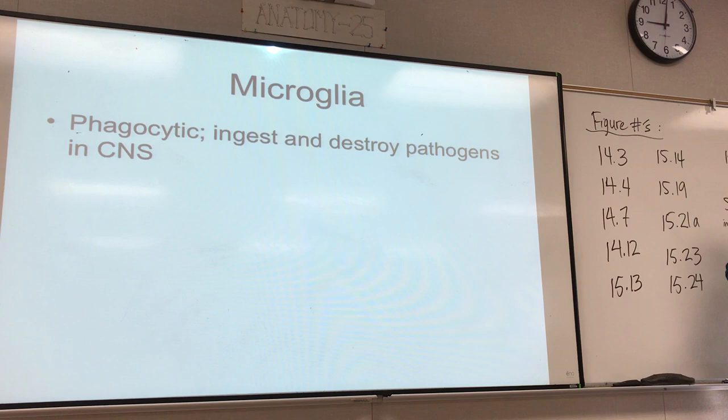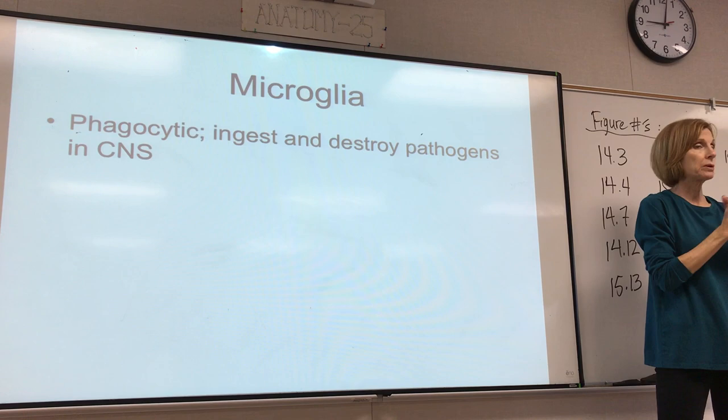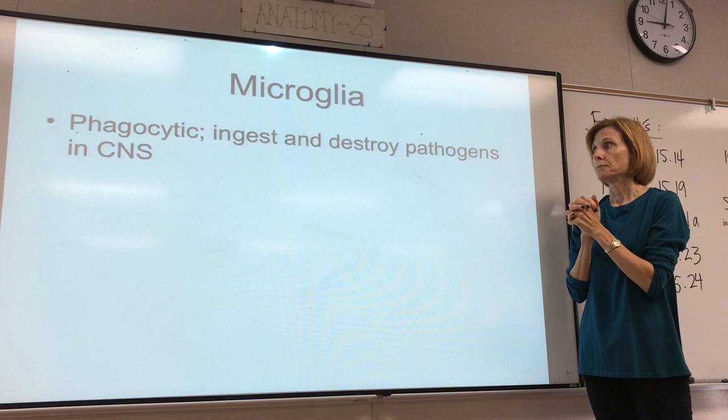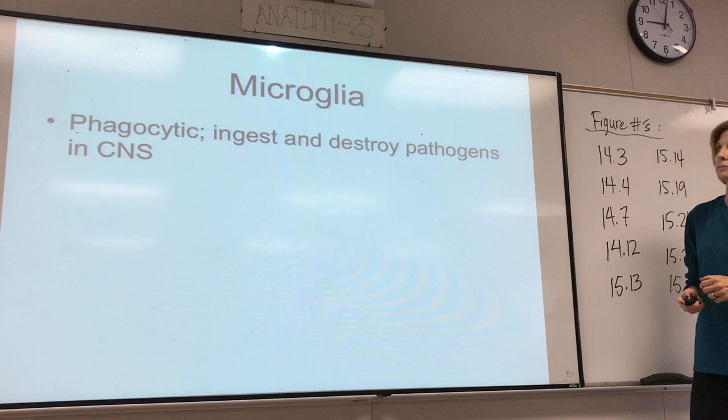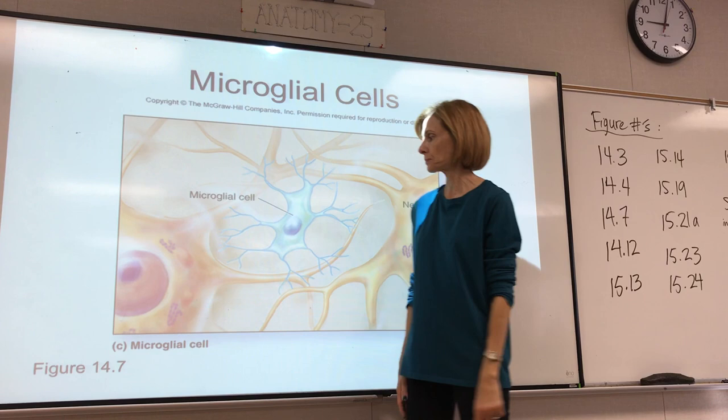A third type of neuroglial cell in the CNS is called microglia. These cells are phagocytic, meaning they will take in and destroy foreign invaders. So these are like macrophages. They are found in the brain and spinal cord, and they are supposed to be very small as far as cell size — that's why it's called micro.